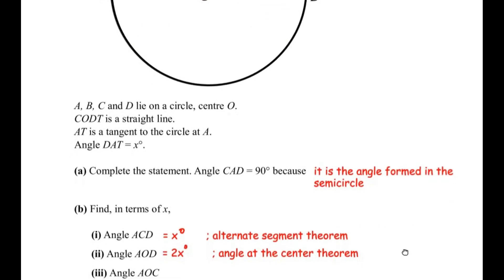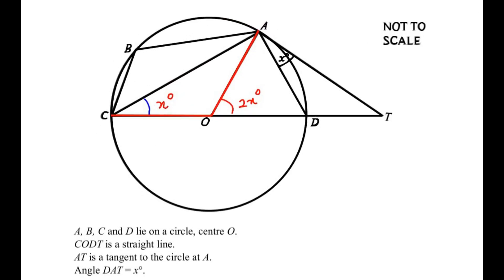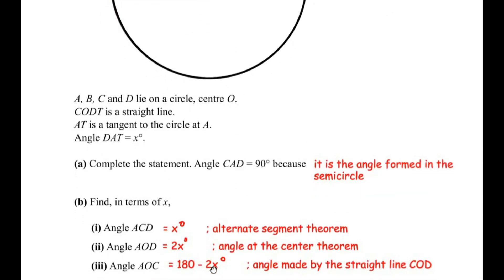Now let us find angle AOC. Since C, O, D is a straight line as stated in the question, the total angle at the center along this line is 180 degrees. This 180 degrees is divided into two angles: 2x degrees (angle AOD) and angle AOC. Therefore angle AOC equals 180 degrees minus 2x degrees, by the straight line COD.